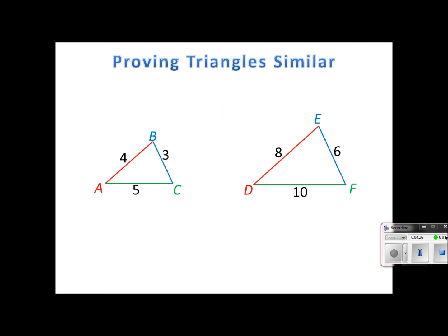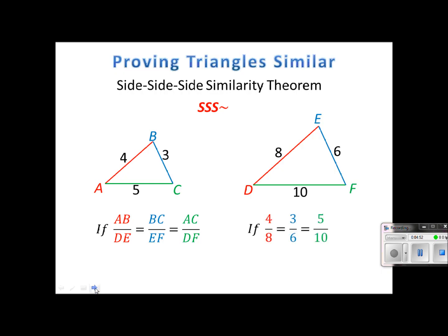Now the last way is called the side side side similarity theorem. And we're going to use the three letters SSS and of course the similar symbol. Anyway, so we're going to prove that all three sets of corresponding sides have the same scale factor. So let's put some numbers in and replace this segment information.